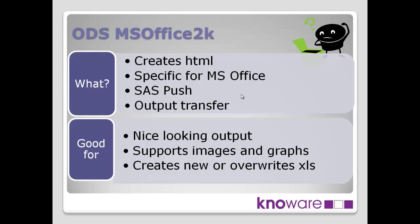ODS MS Office 2K is also creating HTML format files, which Excel can handle and display properly, but it creates them in a format specific for MS Office products — Word and Excel. It displays a much nicer result, so it's much better to use this option. In terms of technique type, it's also a SAS push. This is slightly different though — all the other techniques to date have been moving data across, whereas this technique takes the output from a procedure, whether it's a PROC PRINT or PROC TABULATE or whatever, and pushes that output into the file shown in Excel.